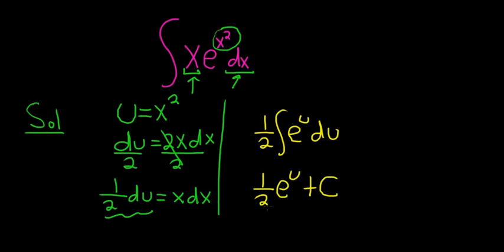And the very last thing to do is replace u with x squared. So this is 1 half e to the x squared, and then plus our constant c. That's it. And I hope this video has been helpful.